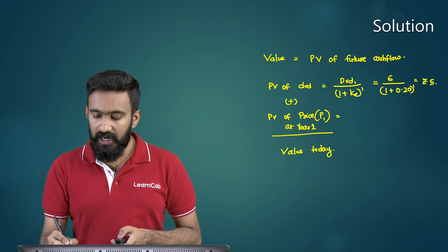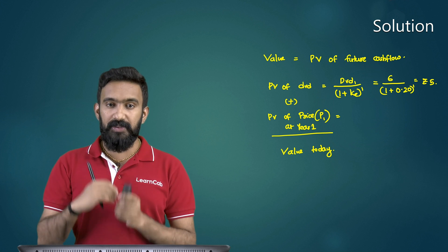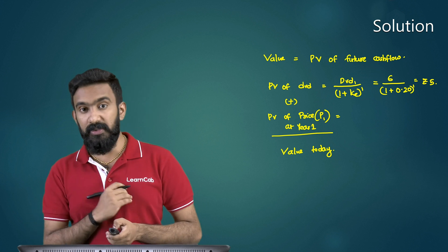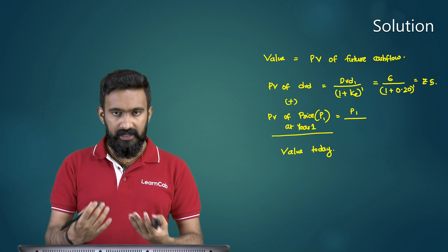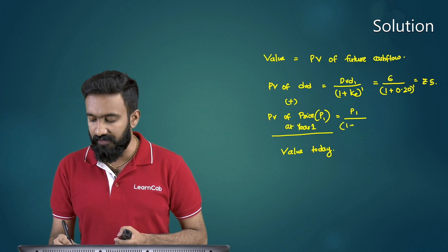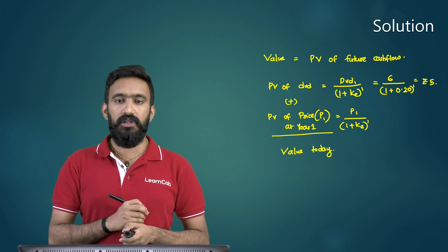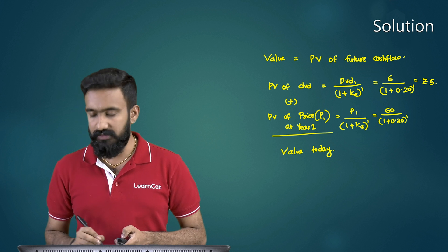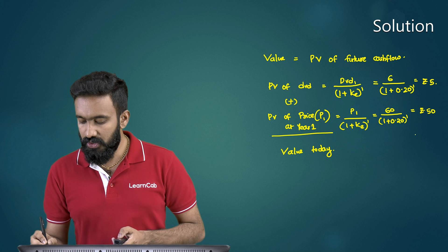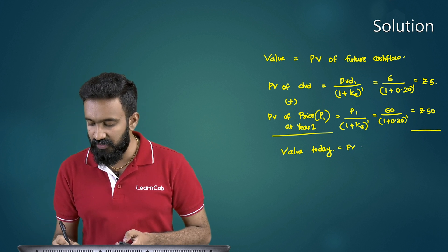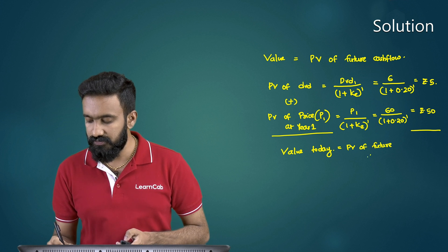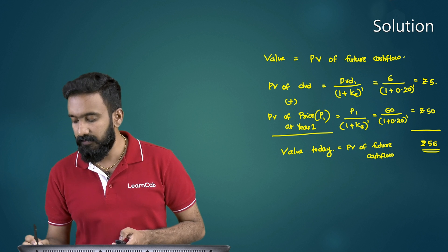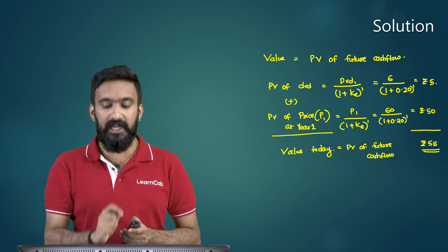Similarly, when I sell the share at the end of the year, I get a price of rupees 60. That also has to be discounted. P1 is discounted at the required rate of return K: 60 divided by (1 + 0.20) to the power of 1, which gives rupees 50. Therefore, the value today is the present value of all future cash flows, which is rupees 5 plus rupees 50, equal to rupees 55.